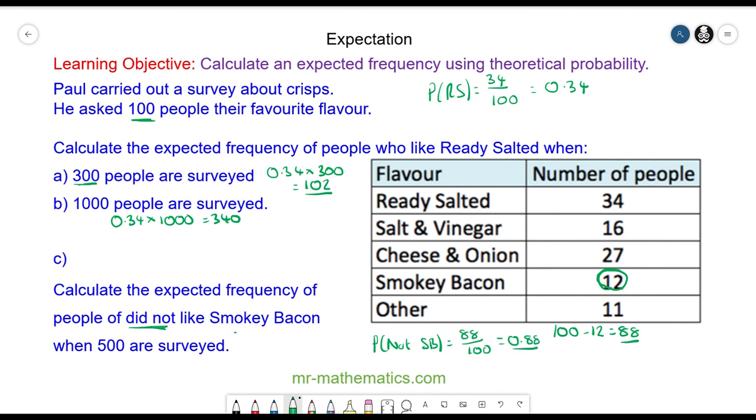So the experimental probability is 0.88 multiplied by the sample of 500, and you would expect 440 people to not choose Smoky Bacon.